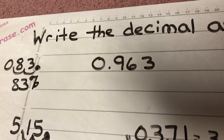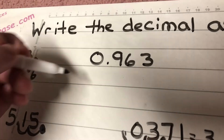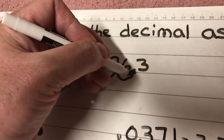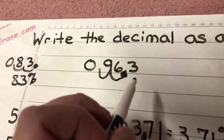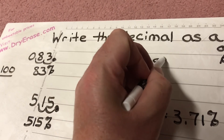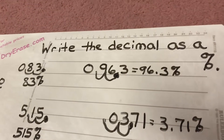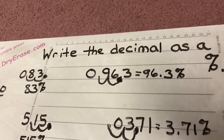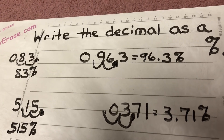Last one: 963 thousandths. Multiplying by a hundred — moving the decimal twice to the right — I get 96.3, which is 96 and three tenths percent. All right, that's turning decimals into percents and percents into decimals. We'll talk to you later, sixth grade. Bye.